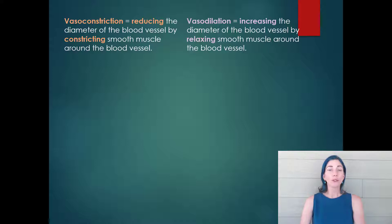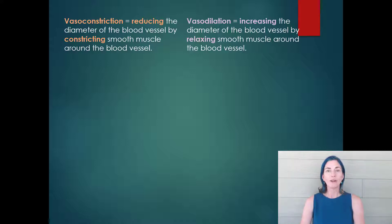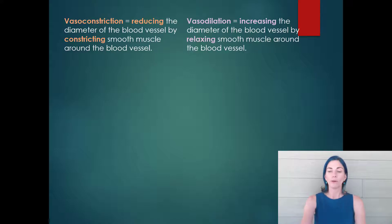Now let's introduce two terms: vasoconstriction and vasodilation. Vasoconstriction describes smooth muscle constricting around a blood vessel — it tightens or reduces the diameter, which increases resistance and decreases flow through that tube. The opposite, vasodilation, occurs when the smooth muscle relaxes: the diameter expands, resistance drops, and more blood flows through.